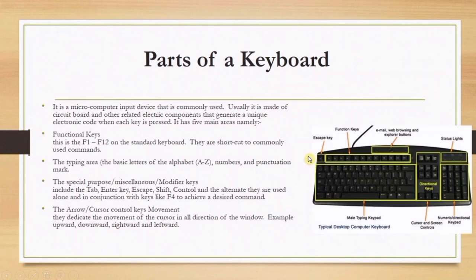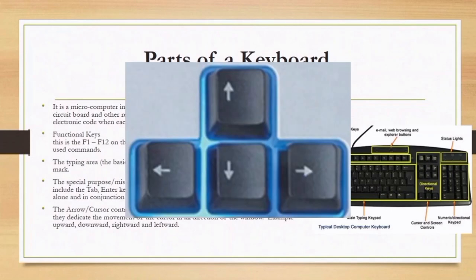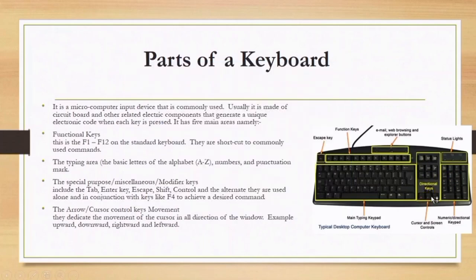The special-purpose, miscellaneous, or modifier keys are used in conjunction with other keys to perform a desirable command. Then we have the arrow keys, also called directional keys or cursor control keys. There are four of them and they control the movement of the cursor in all directions: upward, downward, rightward, and leftward.